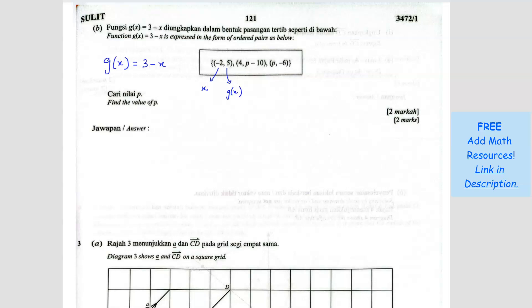So they're asking us to find the value of p. Let's say I use this one. So we know the input is p. So that means x equals to p. And the output, the g(x), equals to negative 6.